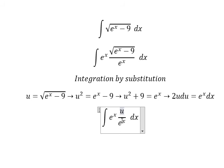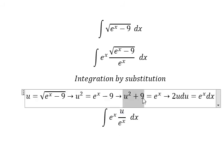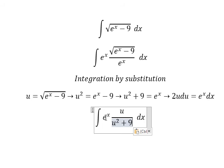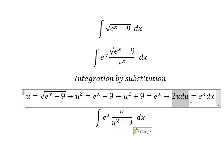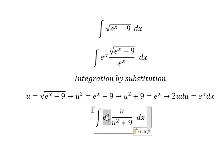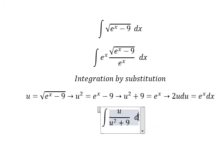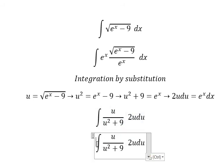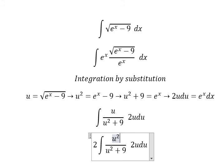So the square root we change by u, e to the power of x we change by this one, and e to the power of x dx we change by this one. So the number two I will put outside — u and u, we have u squared in here.